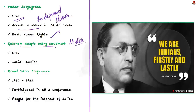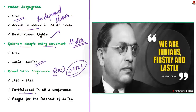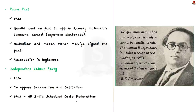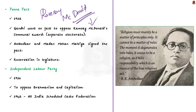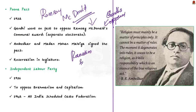Dr. B. R. Ambedkar participated in all three Round Table Conferences held between 1930 and 1932, representing the interests of the depressed class. In 1932, when British Prime Minister Ramsay MacDonald introduced the Communal Award — which was announced to provide separate electorates to the depressed classes — Ambedkar signed the Poona Pact in 1932. The Poona Pact, instead of providing separate electorates, guaranteed reservation for the people of the depressed class. It was signed between Ambedkar on behalf of the depressed class among Hindus and Madan Mohan Malaviya on behalf of the other Hindus.